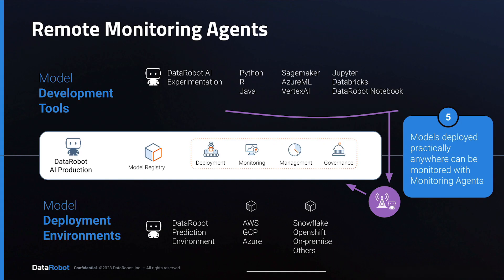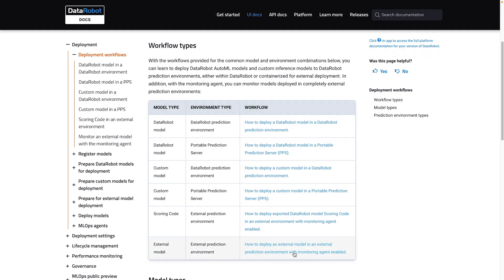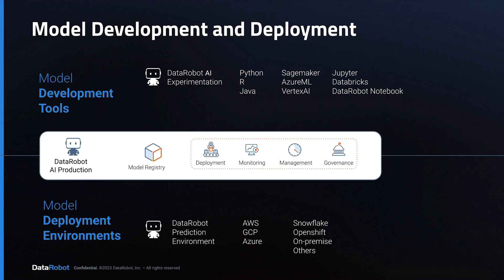The fifth option is to use a deployment process that does not involve DataRobot's model registry. Models deployed practically anywhere can be monitored with monitoring agents. This fifth workflow is named external model in external environment, and it is described in row 6 of the workflows table. Now you should have a conceptual understanding of the flexibility of the DataRobot AI production platform for managing and monitoring all of your organization's models across many environments. Other tutorials are available to demonstrate the steps for each of the workflow choices.